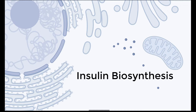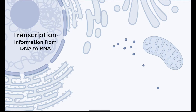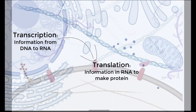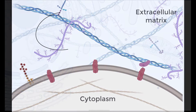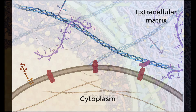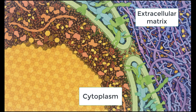In eukaryotic cells, the biosynthesis of cytoplasmic proteins begins with transcription in the nucleus followed by translation in the cytoplasm. Secreted and cell surface proteins go through a few more steps. In this video, we will learn how insulin is synthesized in the pancreatic beta cells and prepared for release into the blood.